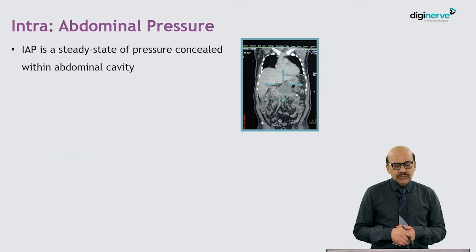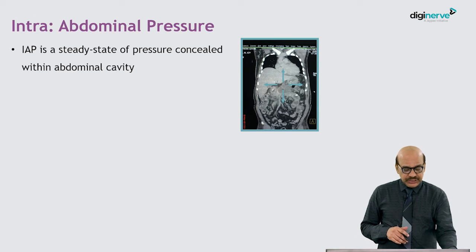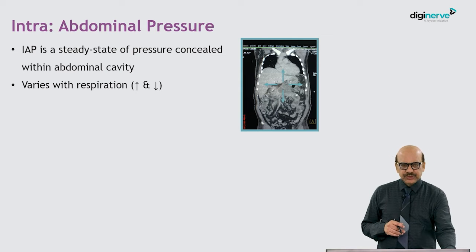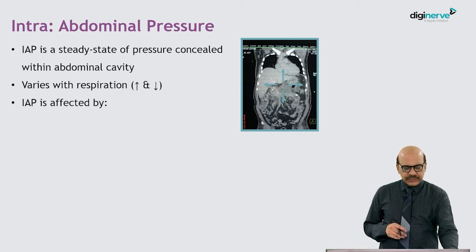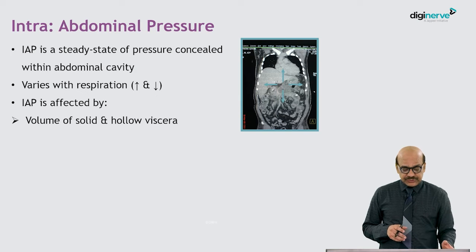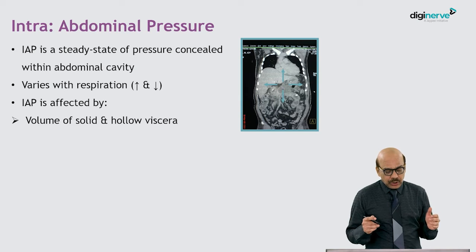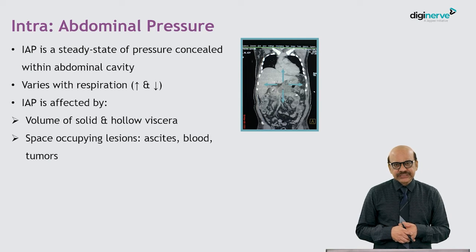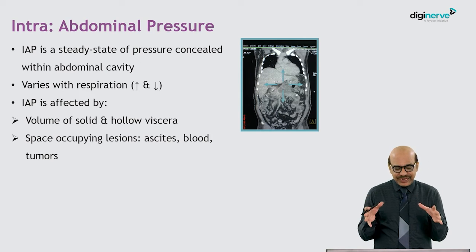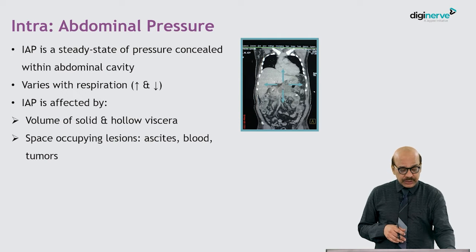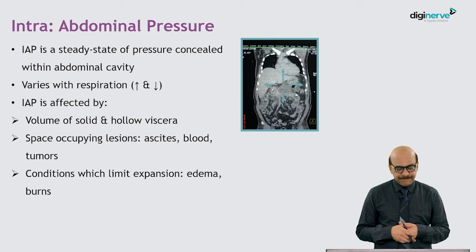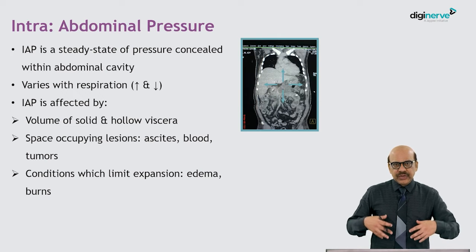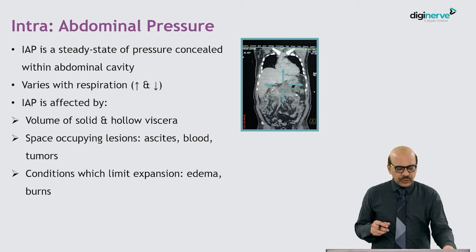Intra-abdominal pressure is a steady-state pressure within the enclosed abdominal cavity, and this pressure varies with inspiration and expiration. Various factors affect this pressure: the volume of the viscera — both solid and hollow — space-occupying lesions such as visceral fat, ascites, blood, or tumours, and conditions that limit expansion such as edema or a significant eschar following burns.